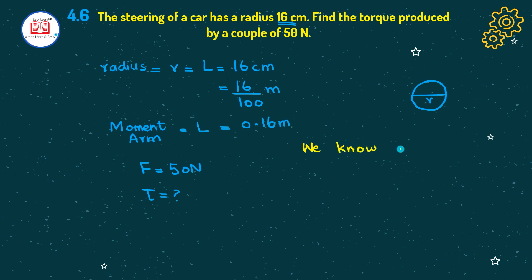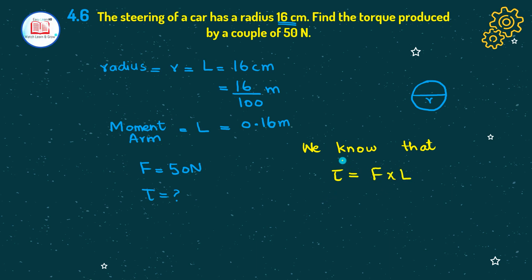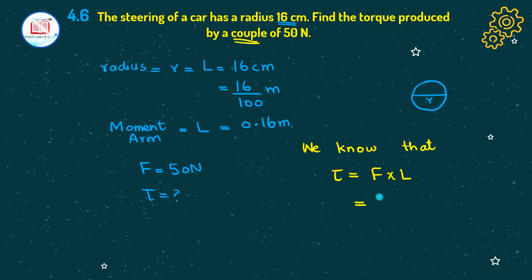We know that the torque formula is T equals F cross L. Here is the trick: when we have a couple of force, the moment arm is multiplied by 2 because two forces act, doubling the moment arm. So force is equal to 50, multiplied by L, multiplied by 2. Because of the couple of force, the moment arm doubles. So we have 50 times 2 times 0.16.